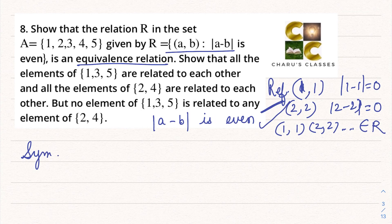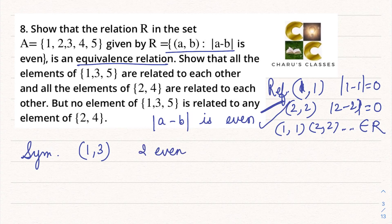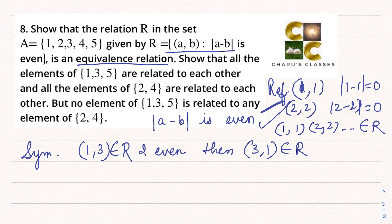Now let's check the symmetric relation. For any two elements whose difference is even, suppose I take (1, 3): |1 − 3| = 2, which is even. So (1, 3) belongs to R. Then |3 − 1| = 2 also, so (3, 1) also belongs to R. In general, if (a, b) gives an even difference, then (b, a) gives the same even difference. Therefore it is a symmetric relation.